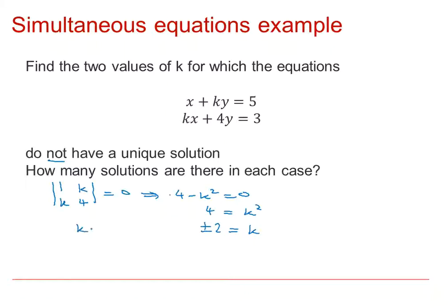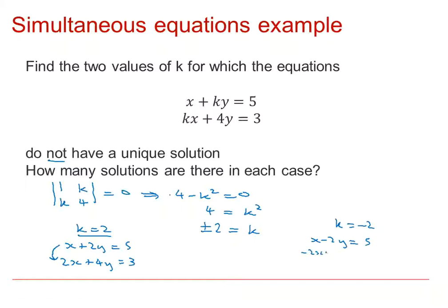Looking at the two cases: when K = 2, the equations are X + 2Y = 5 and 2X + 4Y = 3. If you double the first equation, it is inconsistent with 2X + 4Y = 3, so there are no solutions. When K = −2, the equations become X − 2Y = 5 and −2X + 4Y = 3. Multiplying the first equation by −2 shows they are also inconsistent with each other, so again there are no solutions. In both cases the lines are parallel and not coincident.